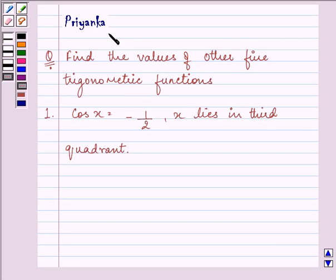Hi and welcome to the session. I am Priyanka and let us discuss the following question. Find the values of other five trigonometric functions when the value of cos x is given to us as minus 1 by 2 and x lies in the third quadrant.